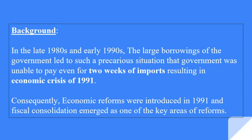First, the background — why did the FRBM Act come and why do we need to study it? In the late 1980s and 1990s, the situation was very bad. India had taken so many loans that we didn't even have money for two weeks of imports, resulting in the economic crisis of 1991. Consequently, economic reforms were introduced in 1991, and fiscal consolidation emerged as one of the key areas of reform.